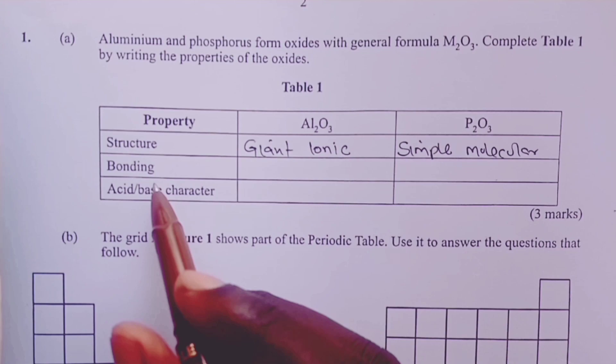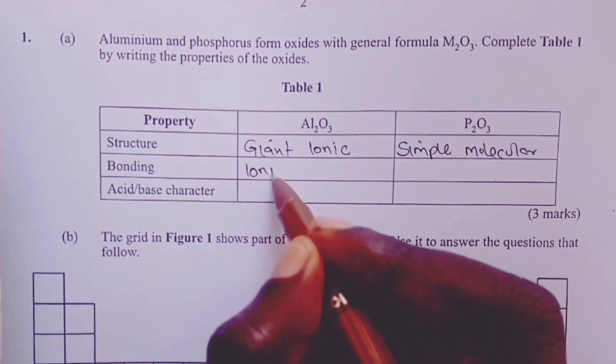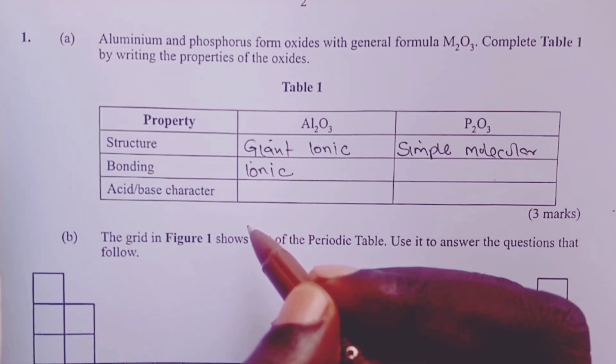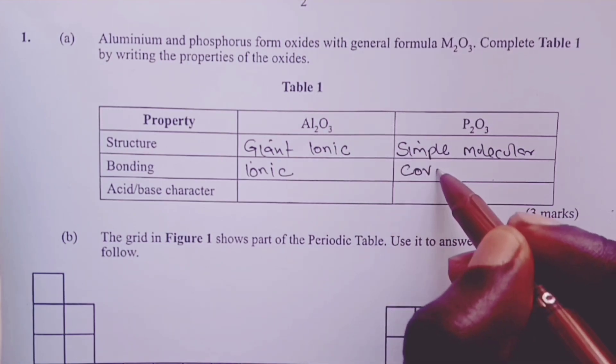Coming to bonding, aluminum oxide has the ionic bond, which we also call electrovalent bond. For phosphorus oxide, the bond is covalent.